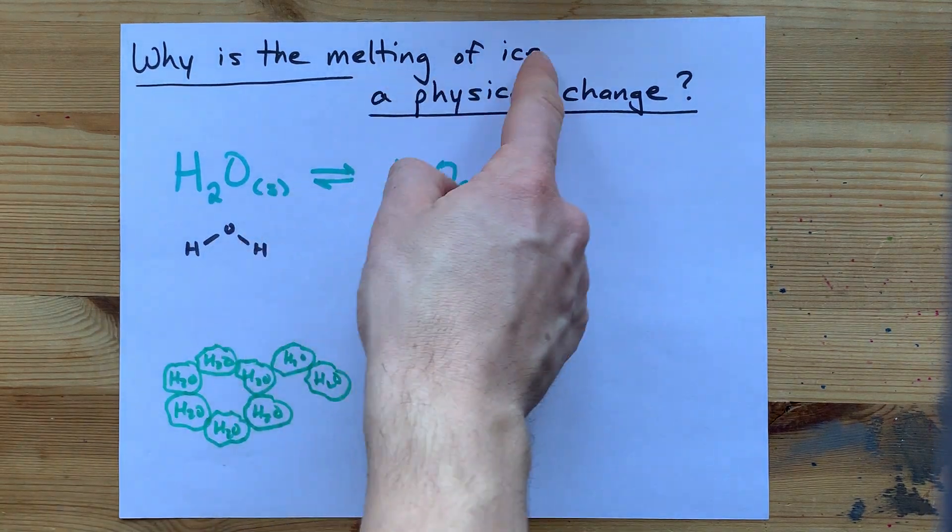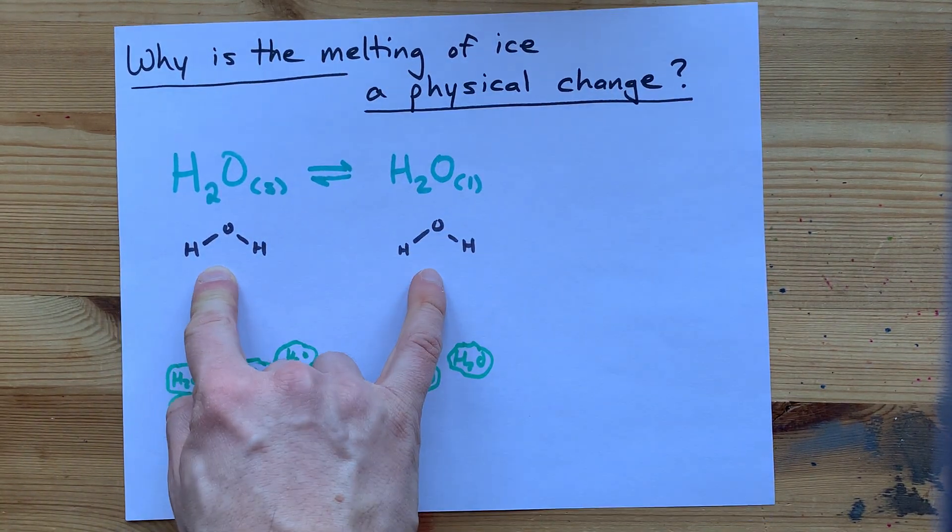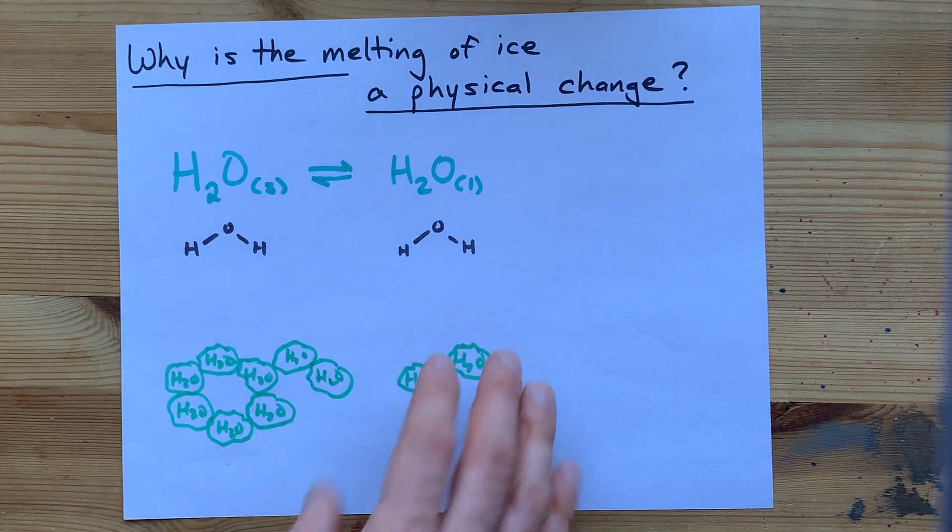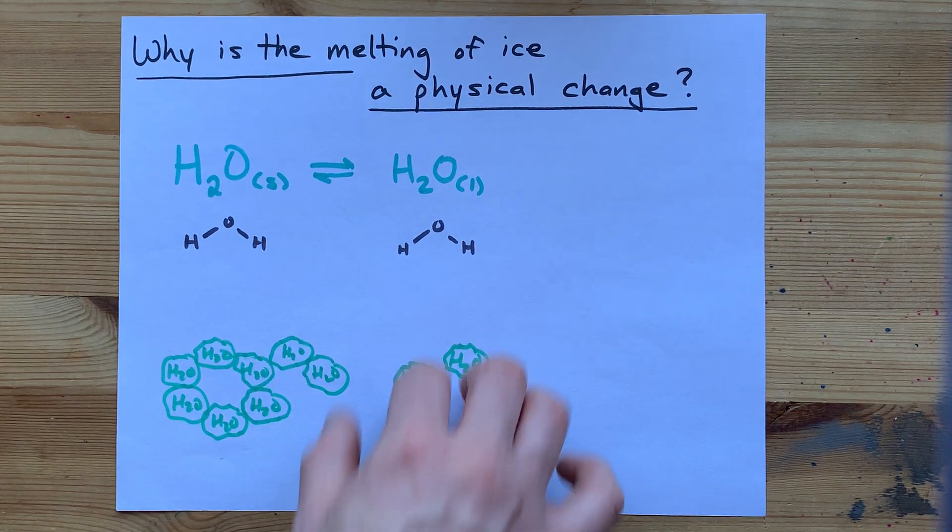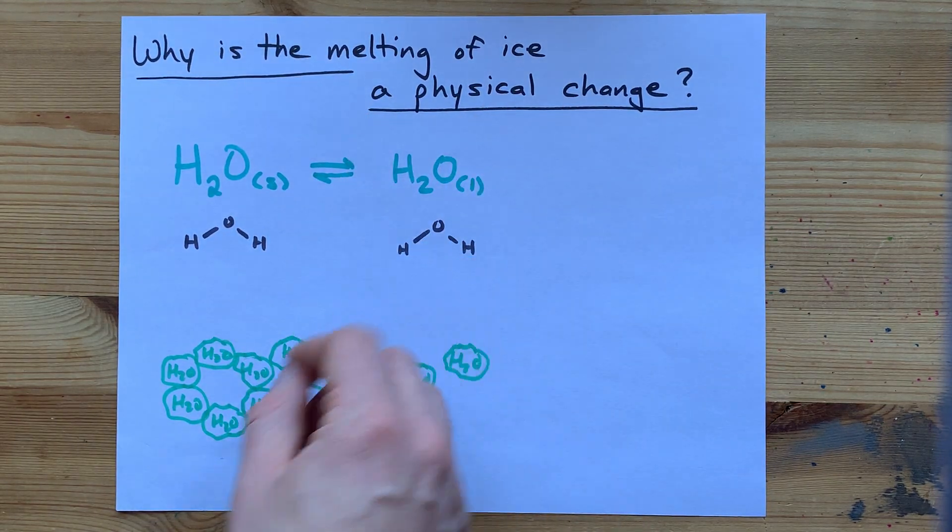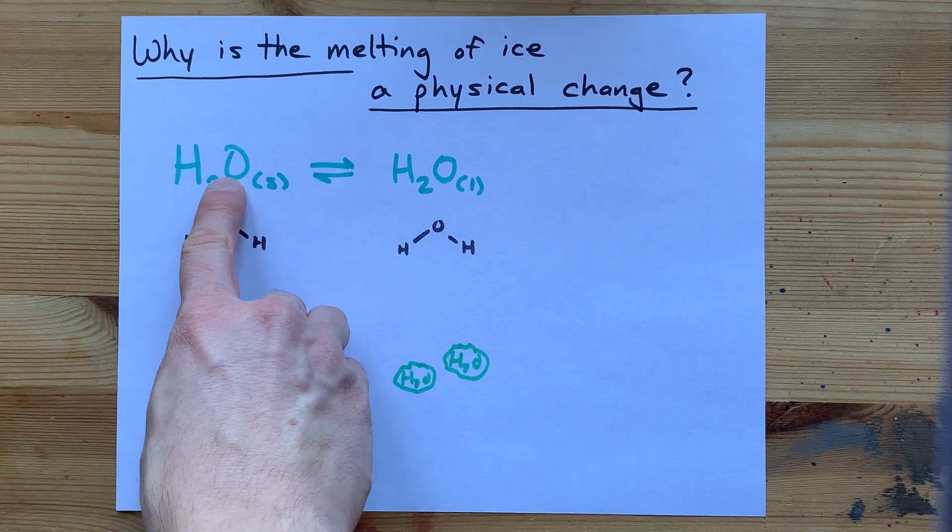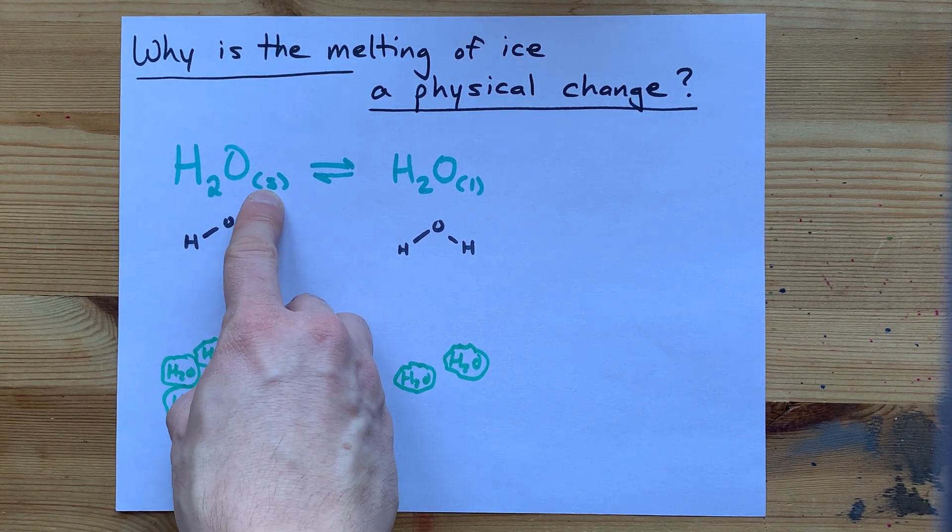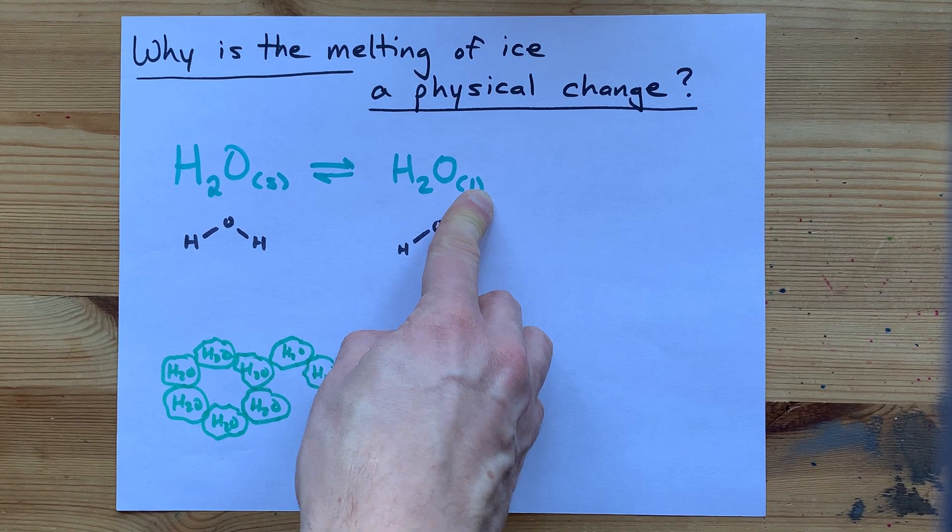The melting of ice is a physical change because no chemical bonds are broken or formed. It is a physical change because water is H2O, both in its solid phase and its liquid phase.